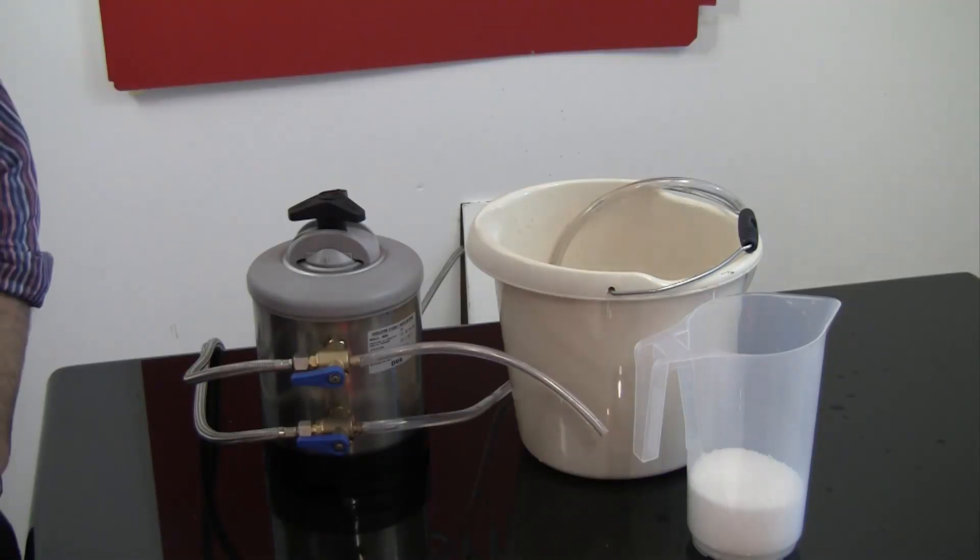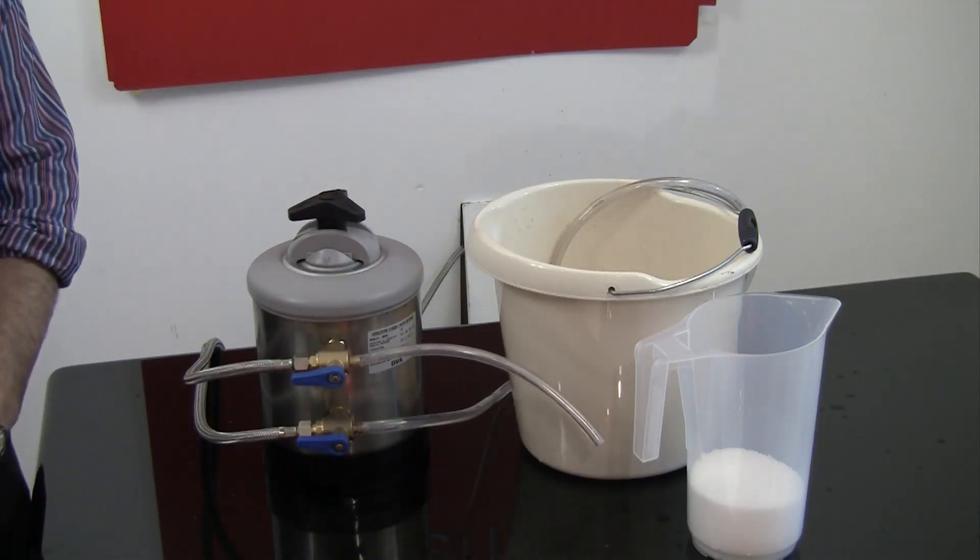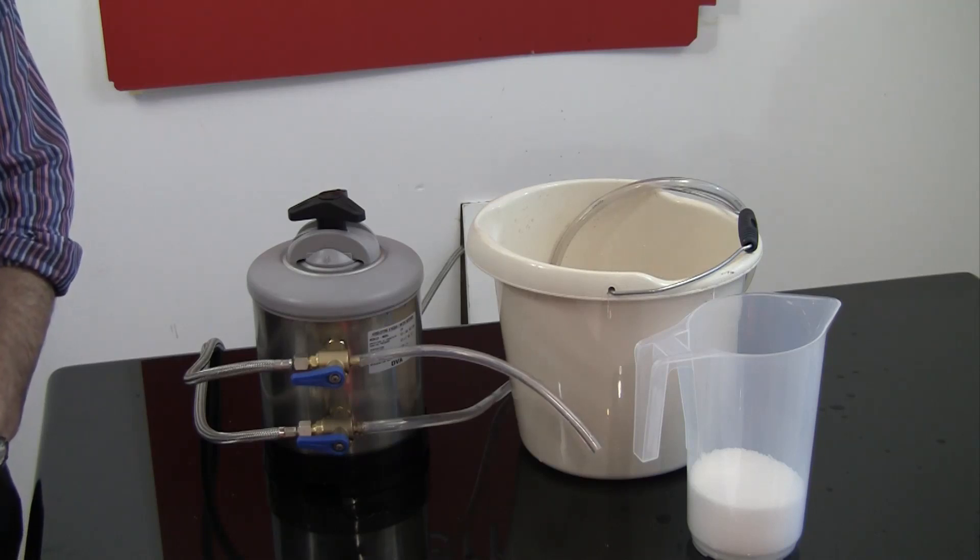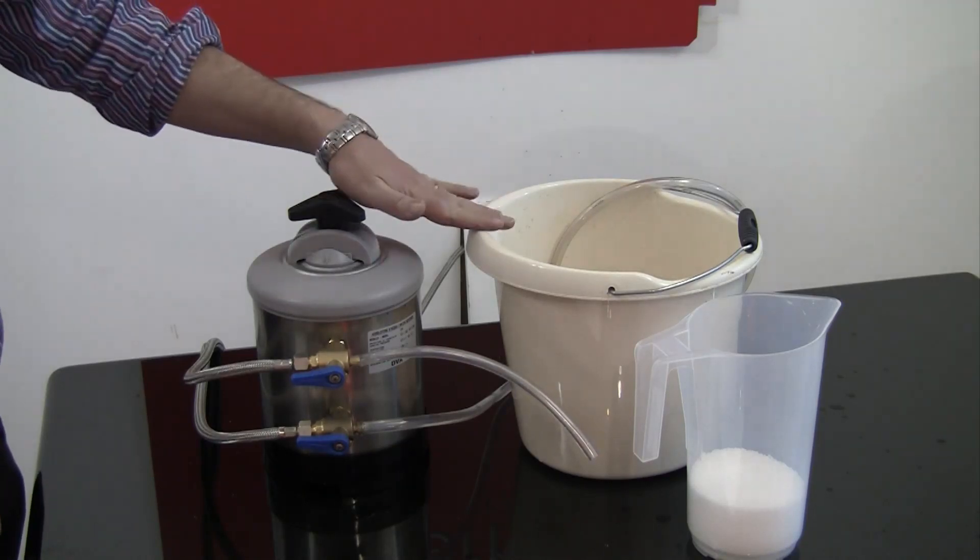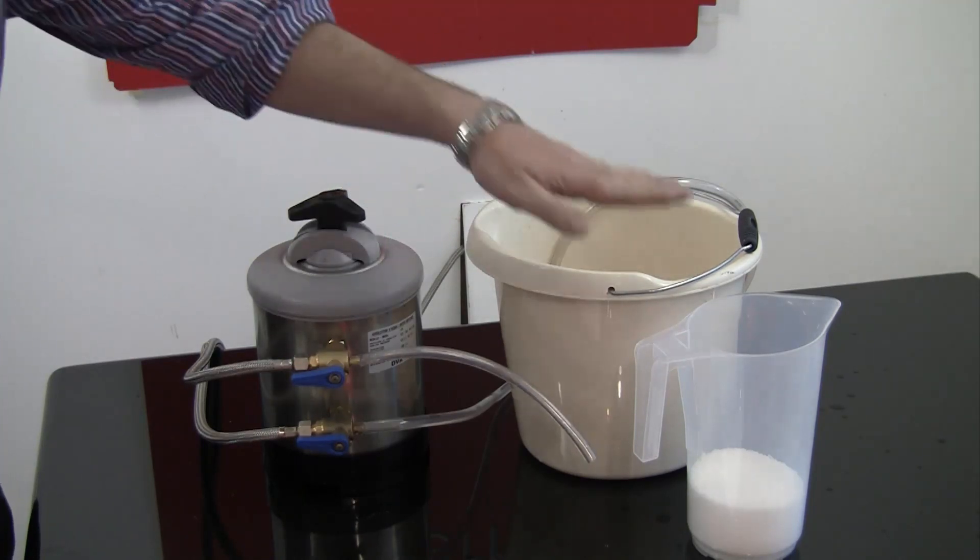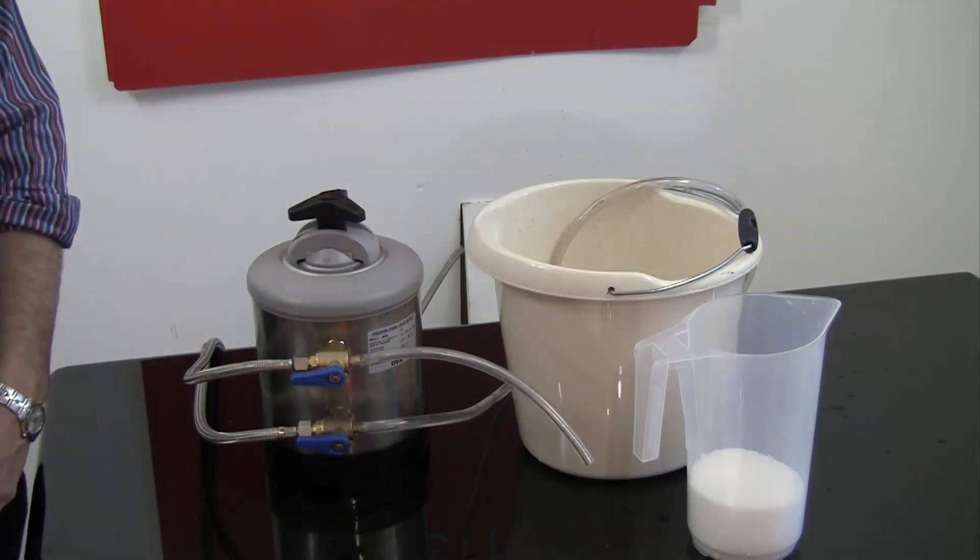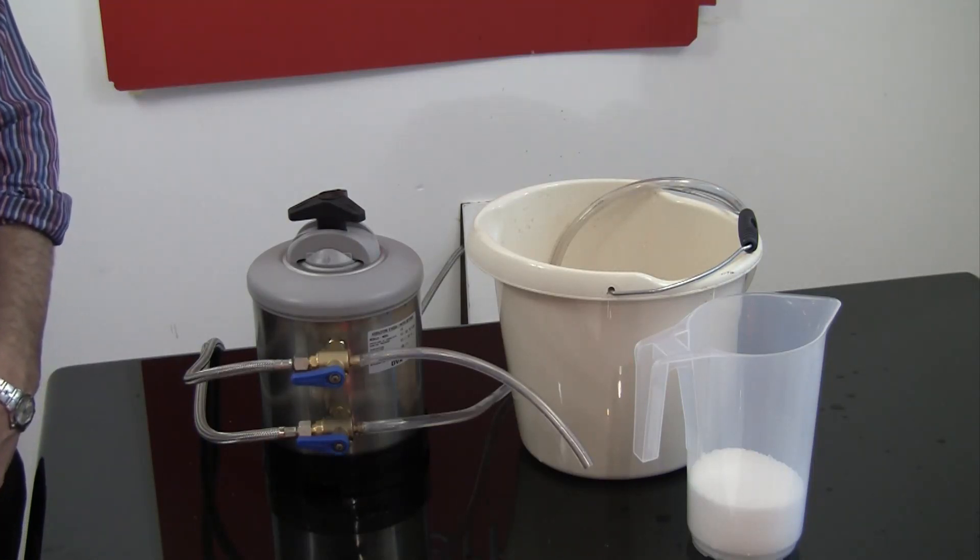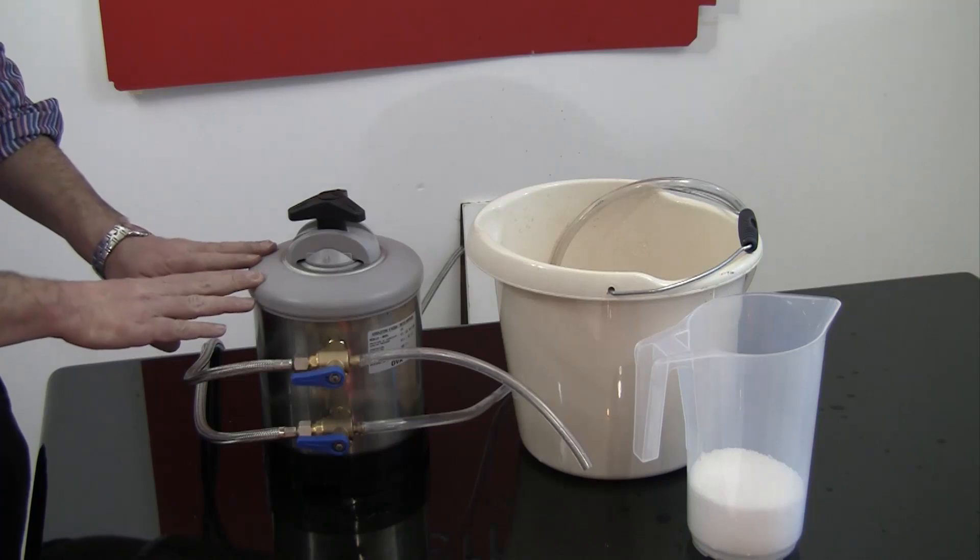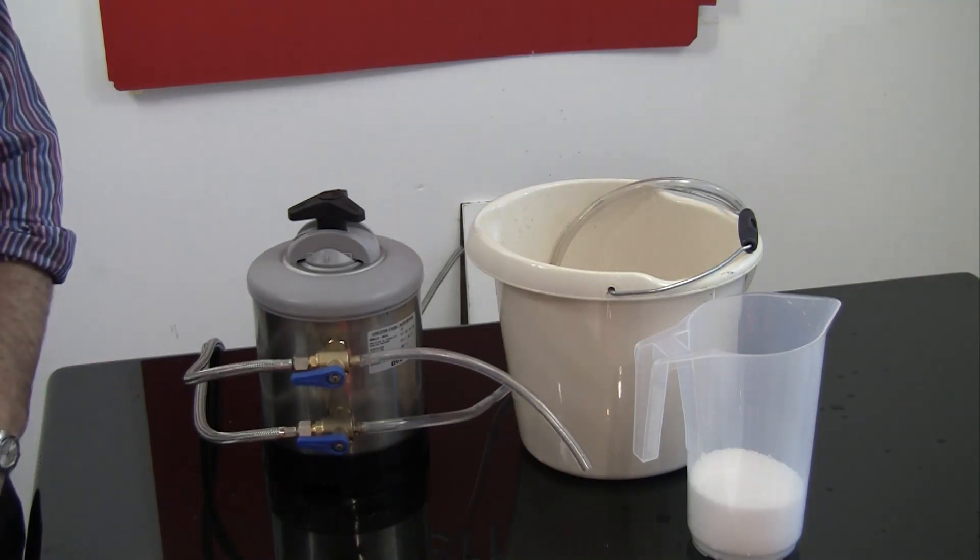To clean or regenerate the resin in the cylinder, the following steps need to be taken. Step one is to turn off the coffee machine. Step two is to get a 10 litre container for the waste water and half a kilo of dishwasher salt. The amount of salt needed will depend on the size of the ion exchanger unit that you have. This is a five litre unit so half a kilo is the correct amount of salt.